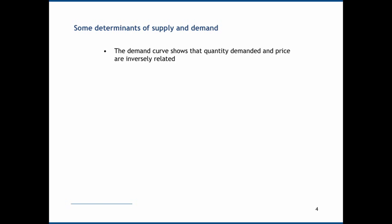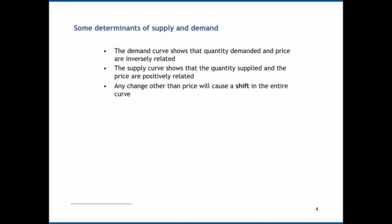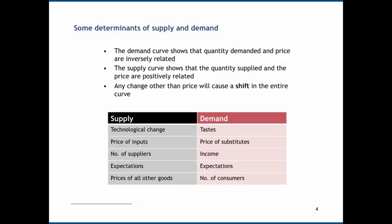We can think about some determinants of supply and demand. The demand curve is only showing us quantity demanded as it relates to price, and the supply curve is showing quantity supplied as it relates to price. Anything other than price changes are going to show up with a shock to those curves. We can have a look at a very simple table here that's giving us some examples of the type of shocks that are going to affect supply and demand, and I think it's reasonably obvious whether a shock is primarily going to affect supply or demand.